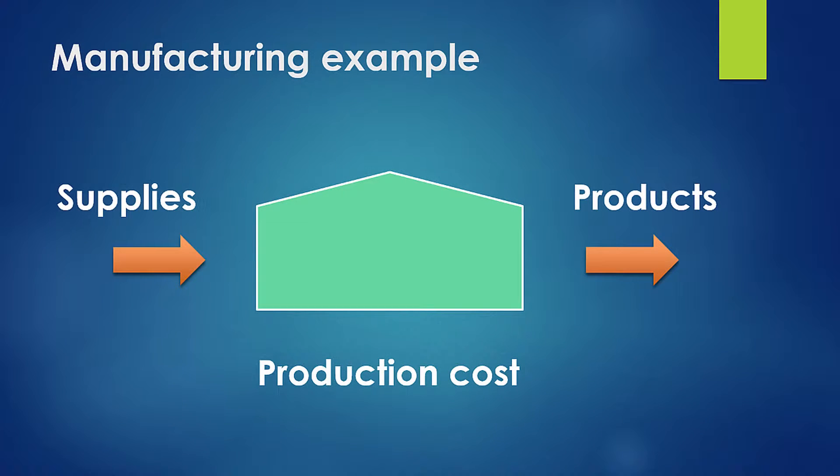Let's stop here and think about what we're doing in this equation. You can think of investors as a manufacturing plant — a little unusual, but bear with me. In a manufacturing plant, you have inputs, you have production costs, and you have outputs. Your inputs would be supplies coming in, then you produce some kind of product and incur production costs, and then your outputs are the products that go out of the plant and are sold for a profit.